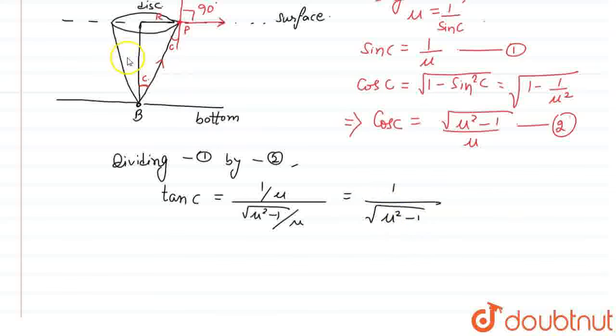Now, it is given in the question that the place where the bulb is placed, or the spot where the bulb is situated below the surface, is h meters deep. That means, if we look at this triangle BOP, we have tan C as perpendicular which is OP by base which is OB. OP is R, base is h. If we compare these two equations, we can get the value of R.